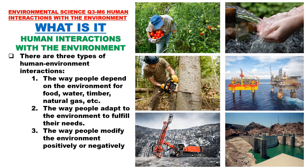There are three types of human-environment interactions. Number 1: the way people depend on the environment for food, water, timber, natural gas, etc. Number 2: the way people adapt to the environment to fulfill their needs. And Number 3: the way people modify the environment positively or negatively.